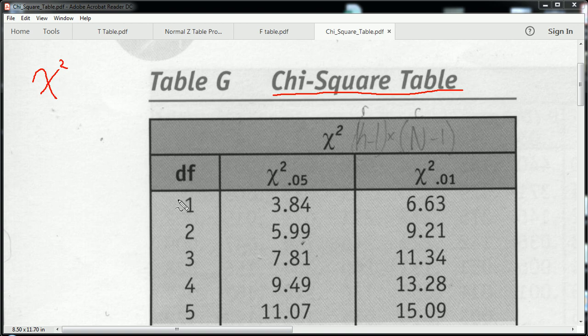So first, you need to determine what your degrees of freedom are. Now depending on the type of test you're doing, that can mean different things. For the two tests, the most common tests, it's the number of rows minus 1 times the number of columns minus 1. And that's how you determine your degrees of freedom.